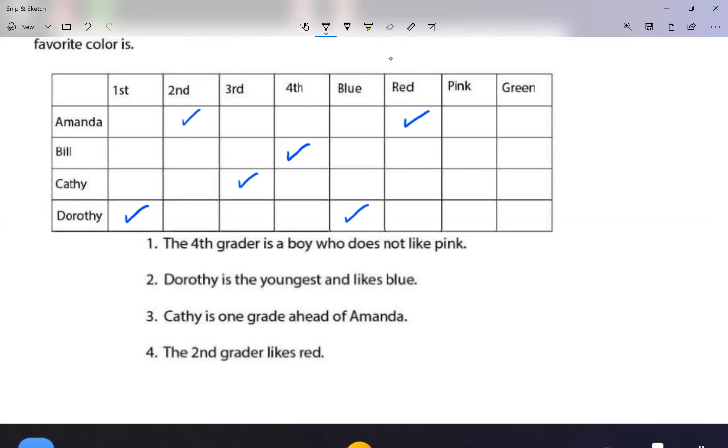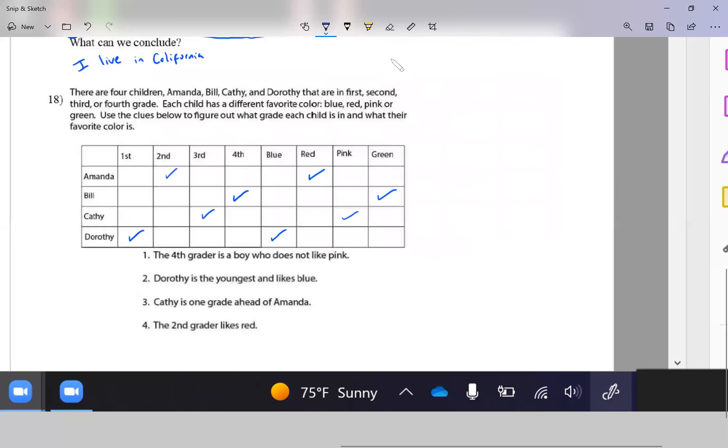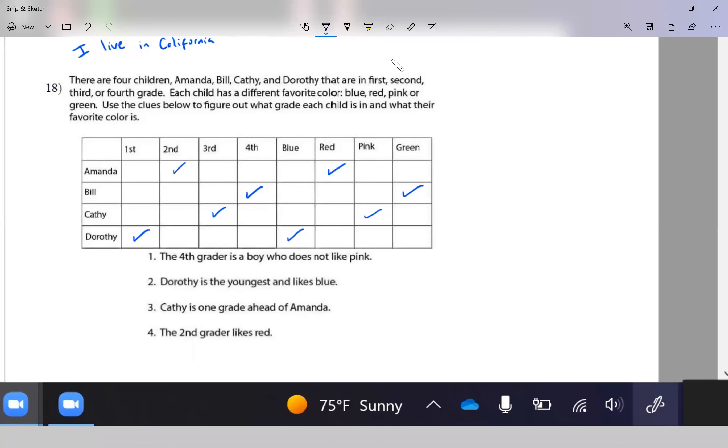Okay, remember the first statement: it says the fourth grader is a boy who does not like pink. So Bill cannot be blue because Dorothy's blue, cannot be red because that's Amanda, he cannot be pink because he doesn't like pink. So Bill likes green, and guess what? Cathy likes pink. So in your homework I'm going to ask for specific stuff, kind of like what is Amanda's grade, or what is Amanda's favorite color, or Cathy, or Dorothy, or Bill. But this is what we call deductive reasoning.